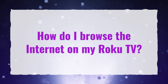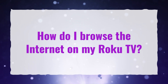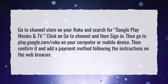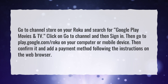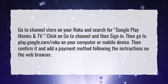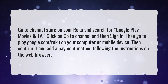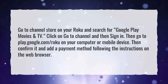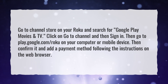How do I browse the internet on my Roku TV? Go to the Channel Store on your Roku and search for Google Play Movies and TV. Click on Go to Channel and then Sign In. Then go to play.google.com/roku on your computer or mobile device, confirm it, and add a payment method following the instructions on the web browser.